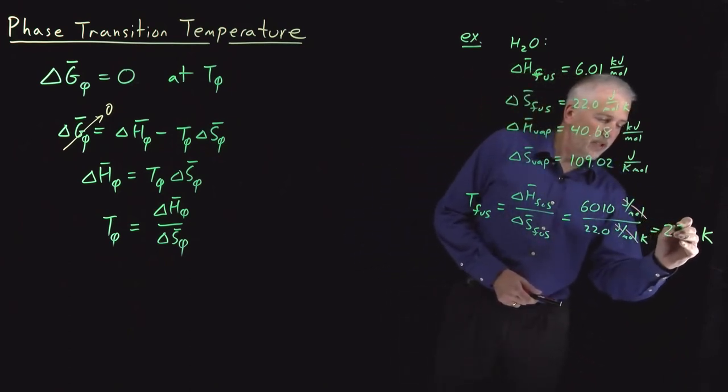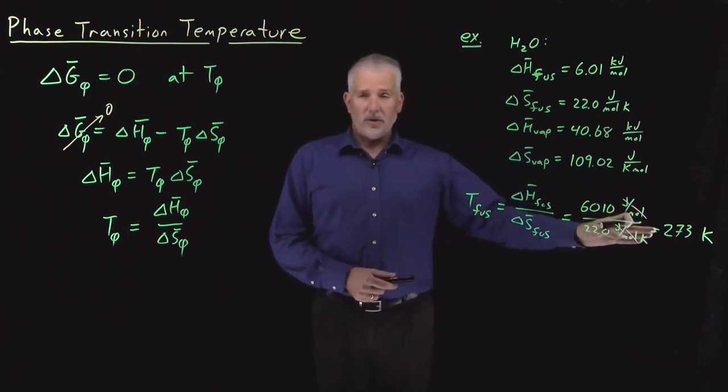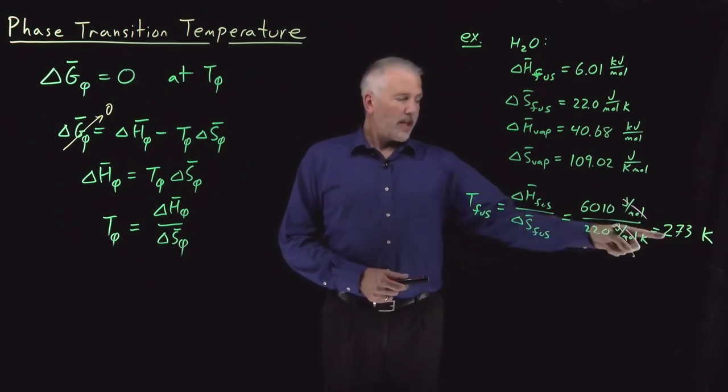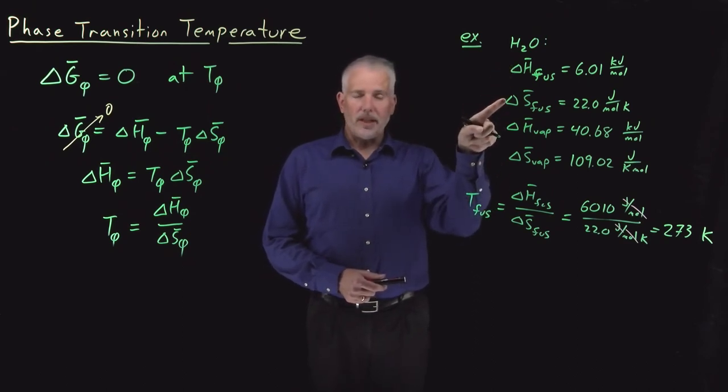So that's a value you already knew. I don't need to tell you that water melts at 0 degrees Celsius or 273 kelvin or 32 Fahrenheit, but that value happens to be also the ratio between its enthalpy of fusion and its entropy of fusion.